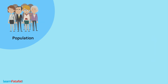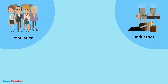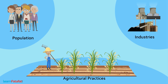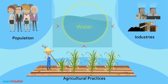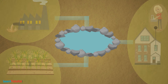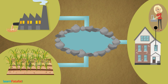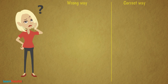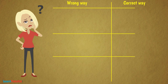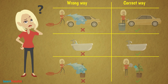The growing population, growing industries, and agricultural practices need a lot of water. The huge consumption of water is causing a reduction of available water. We need to think about a variety of ways to save and conserve our water resources.